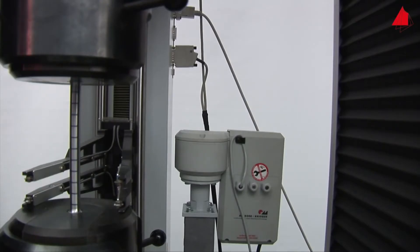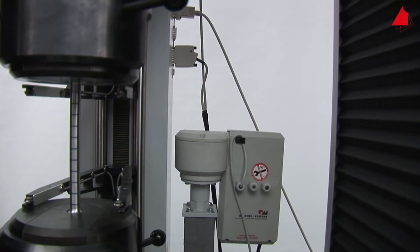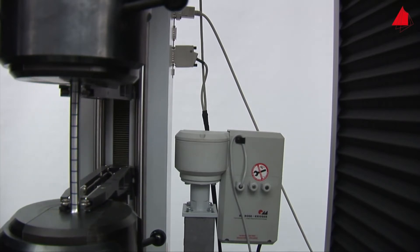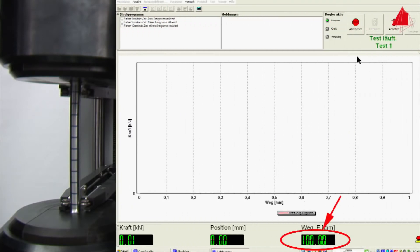Ready. The test starts and the extensometer sensor arms are carefully pressed onto the test piece. This way, the gauge length can be measured throughout the whole tensile test. The gauge length is displayed at the bottom right hand corner of the screen. At the beginning, it amounts to 100 millimeters.